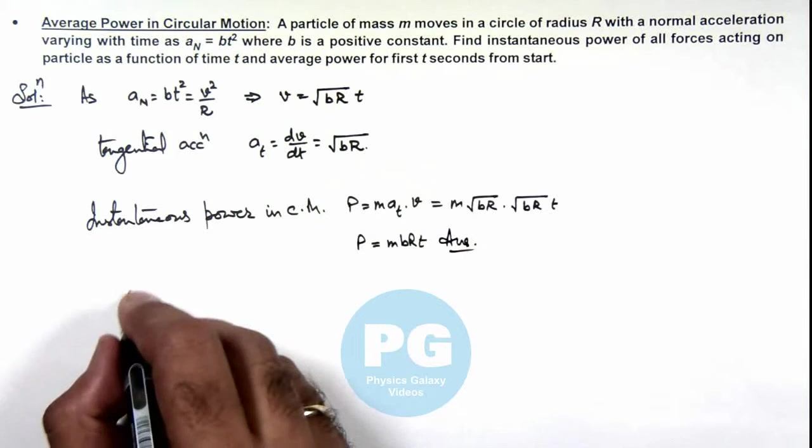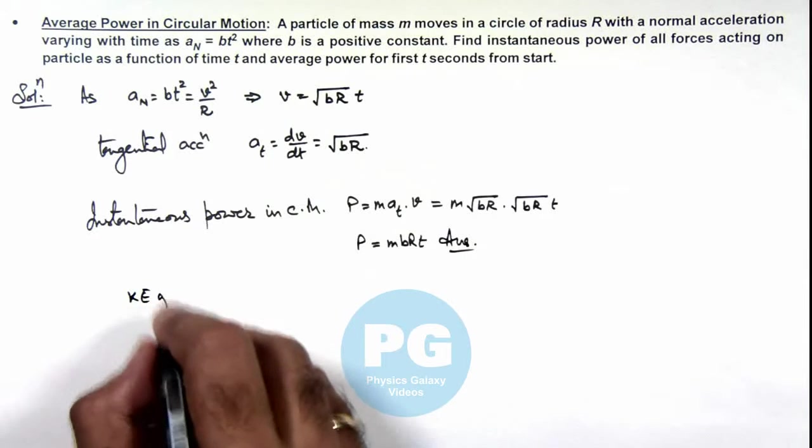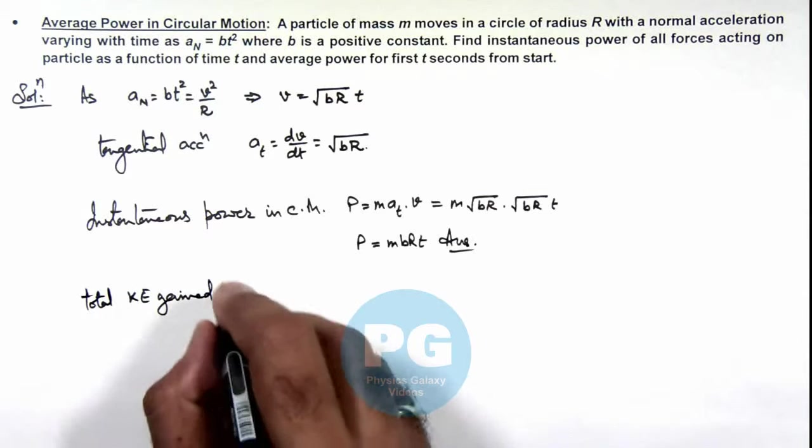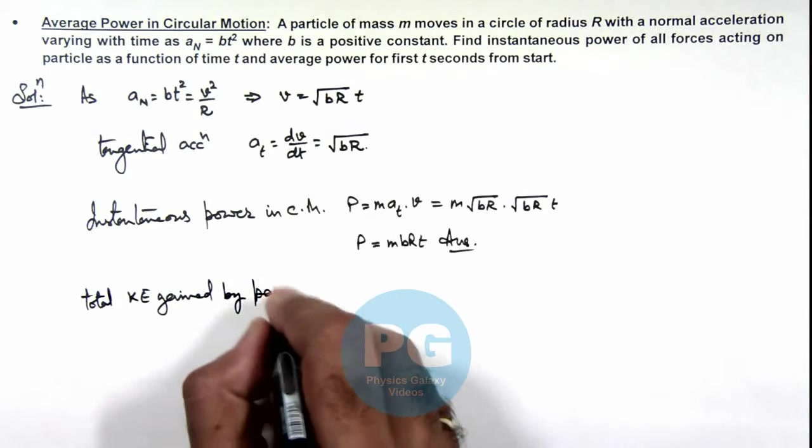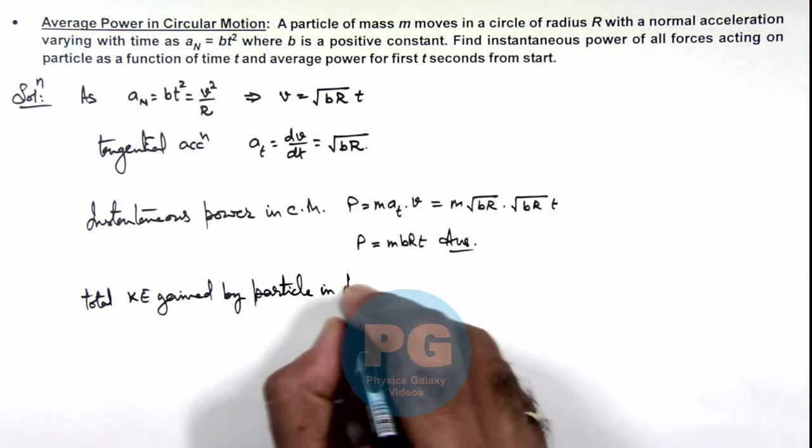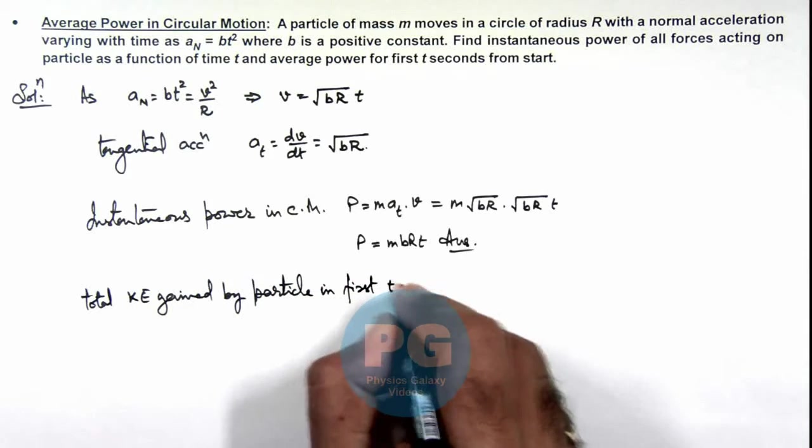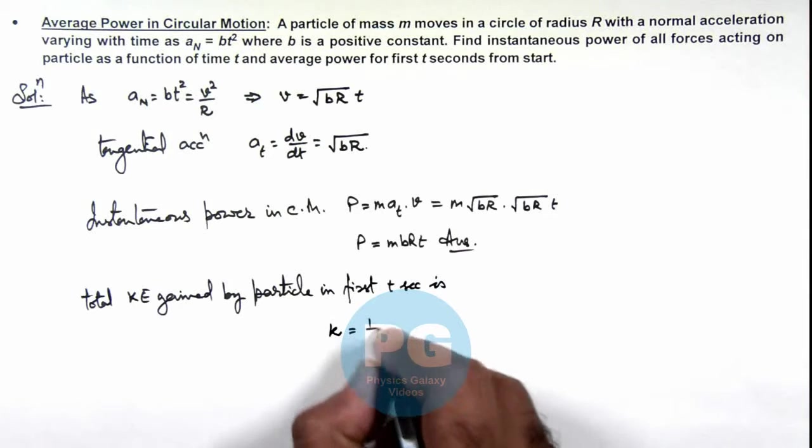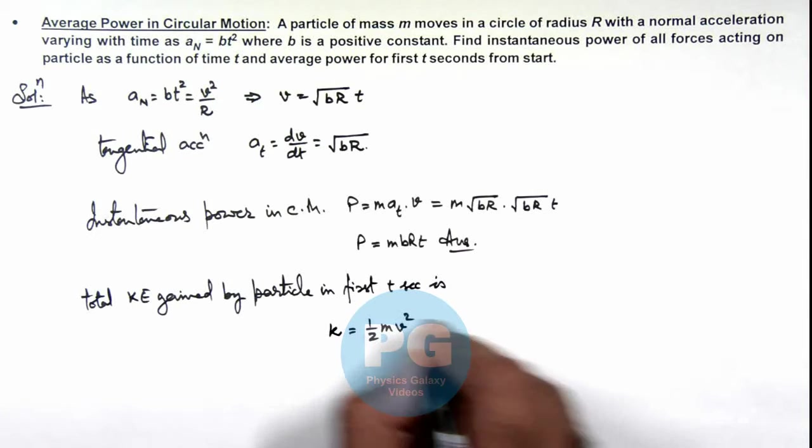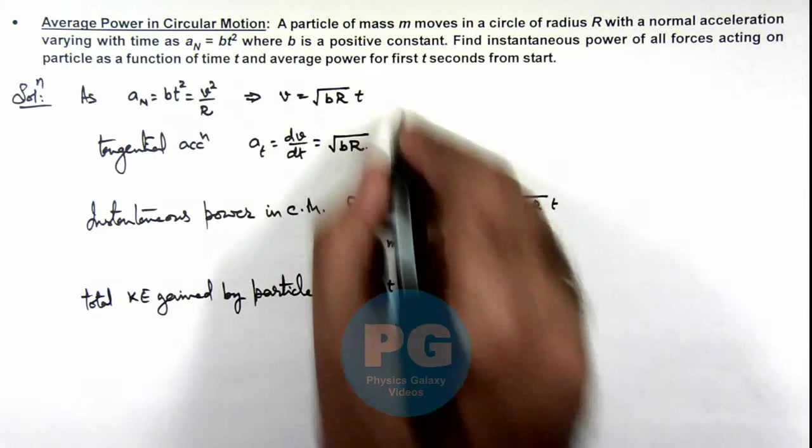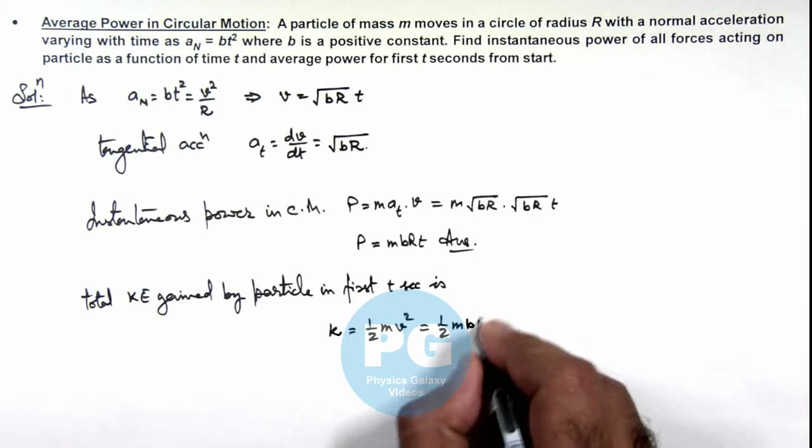And if we calculate the kinetic energy gain, total kinetic energy gain by particle in first t seconds is, this kinetic energy is half m·v². So this will be half m, v² will be b·R·t².